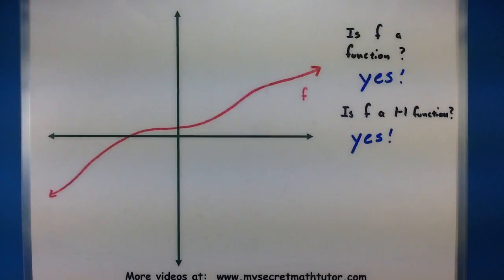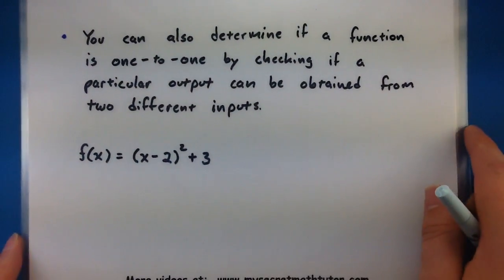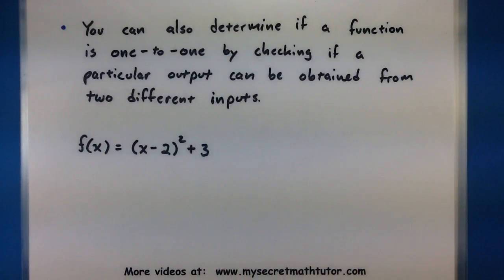Now it's really nice to have a graph and apply both of those tests, but sometimes you may just be looking at an equation and you still have to determine well is this thing one to one or not. If you don't have the graph you can determine if a function is one to one by checking a particular output and seeing if it can be obtained from two different inputs. Now what this is really a test for is not if it is one to one for sure but really a test that it is not one to one. So you're kind of looking for a counter example that breaks it in some sort of way.